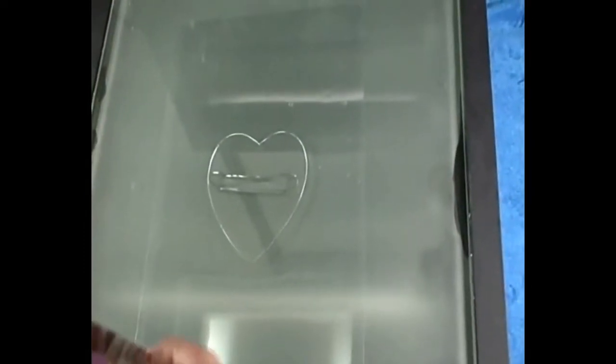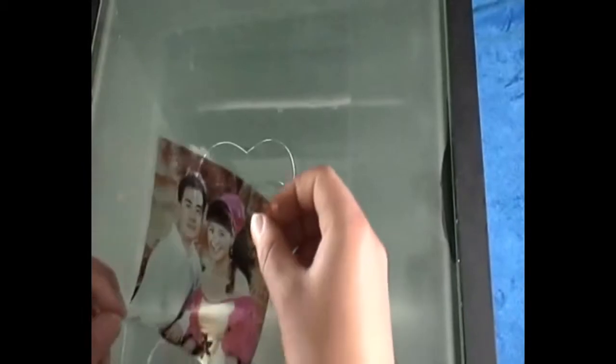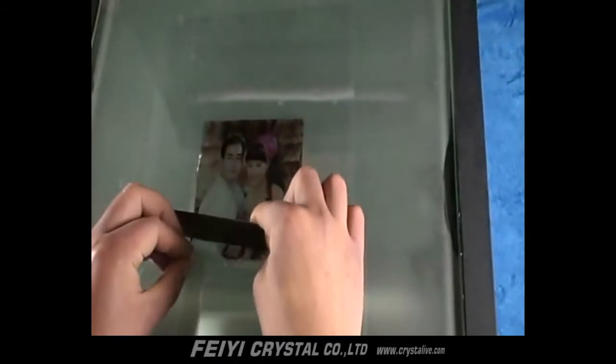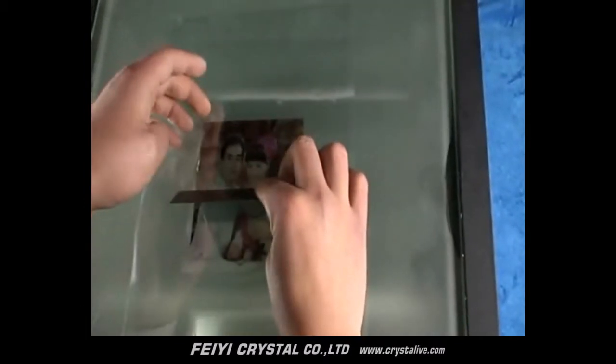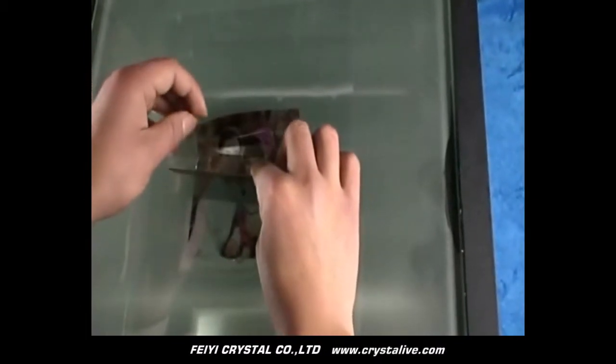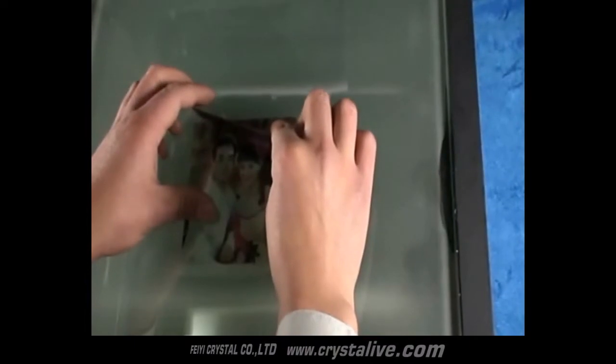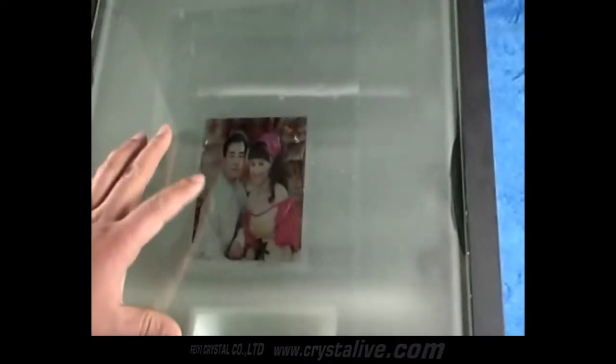Put some glue on the middle of the glass. Take the printed crystal film and make the print face down. Slowly match the printed film and the glass from the center to both sides, then use a ruler to drive the glue evenly so as to avoid the occurrence of bubbles. Begin to flatten it.